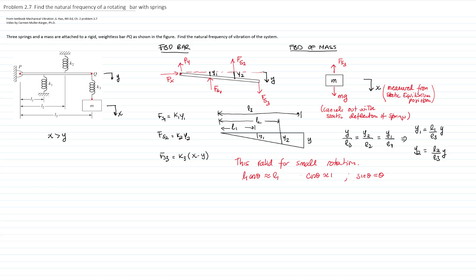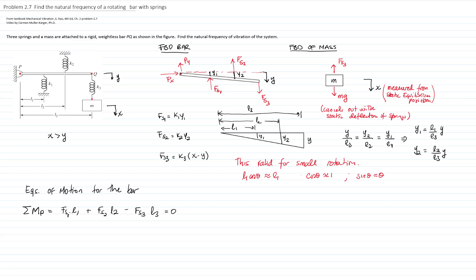Now we write the equations of motion for the bar. Since the bar is weightless, we take moments at point P, the pivot. The moment equation is: Fs1·L1 + Fs2·L2 − Fs3·L3 = 0, because there are no inertial forces since the bar mass is neglected. Substituting the spring forces: K1·Y1·L1 + K2·Y2·L2 − K3·(X − Y)·L3 = 0.